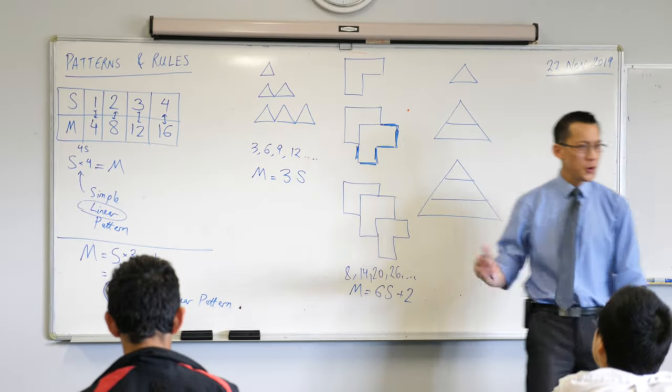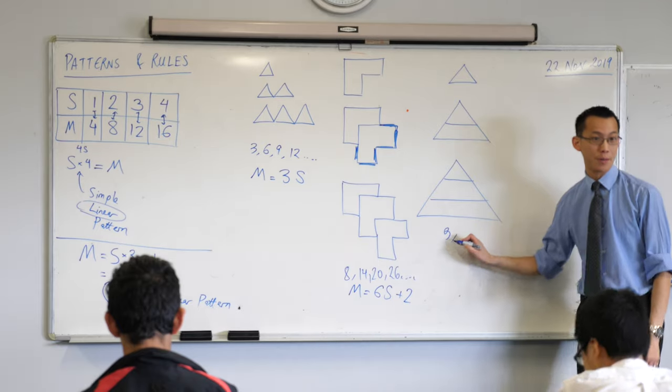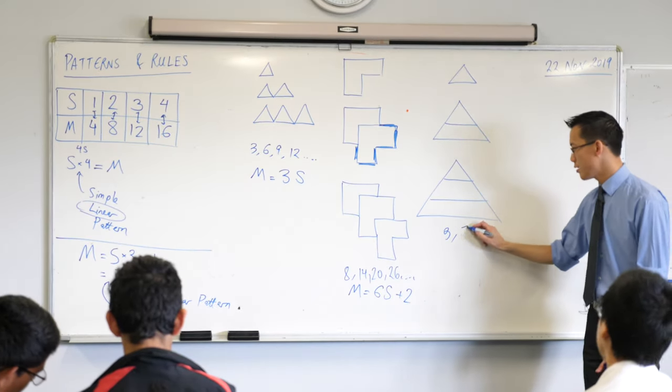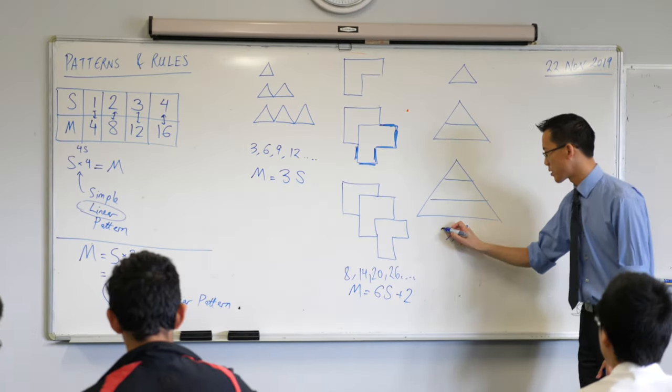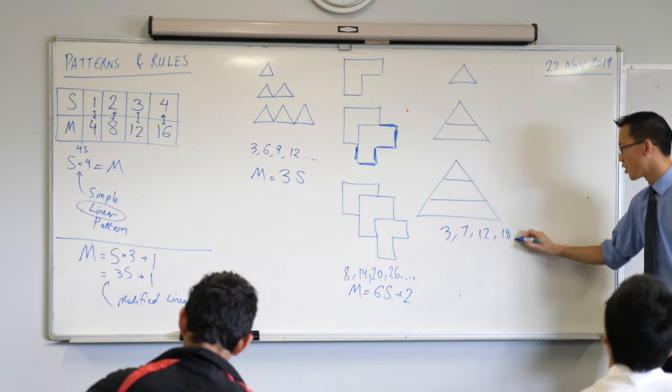And the very last one here, who's written down their numbers for this one? We started with three. What was the next one? Seven. Seven, that's a weird looking three. What's the next one? Twelve. And then did anyone work out what the next one would be? Eighteen.